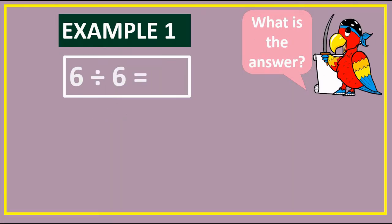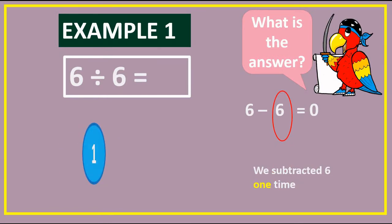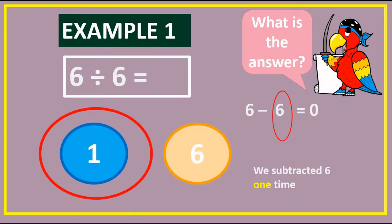Let's look at this example here. Six divided by six equals... Can you figure it out? You have to subtract six from six. So you have to say in your mind, six take away six equals... Do you know the answer? Zero. So how many times did you have to subtract six? We subtracted six one time. So the answer to the problem six divided by six equals one.